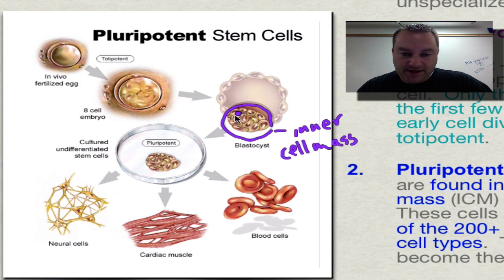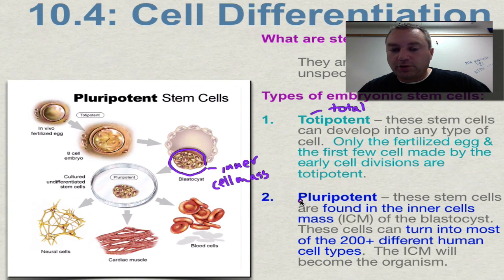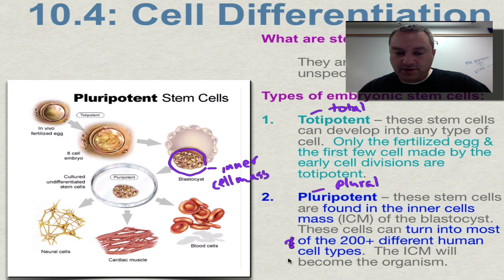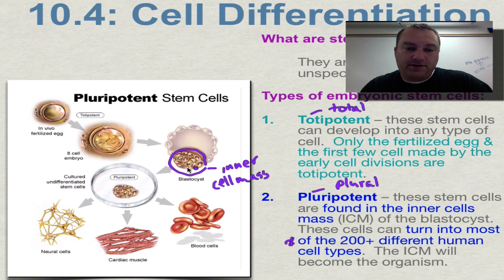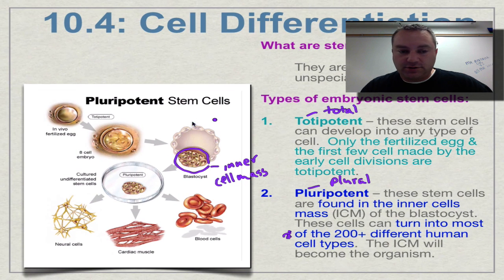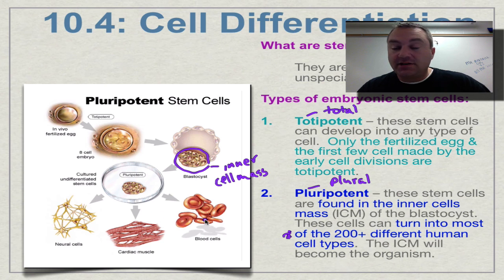The inner cell mass cells are pluripotent. Remember, 'pluri' means plural — more than one. They're going to become any of the 200-plus cell types in your body. They're not totipotent because they won't become the cells that form the amnion. They can turn into blood vessels, cardiac muscle, or neural cells — still very, very powerful.